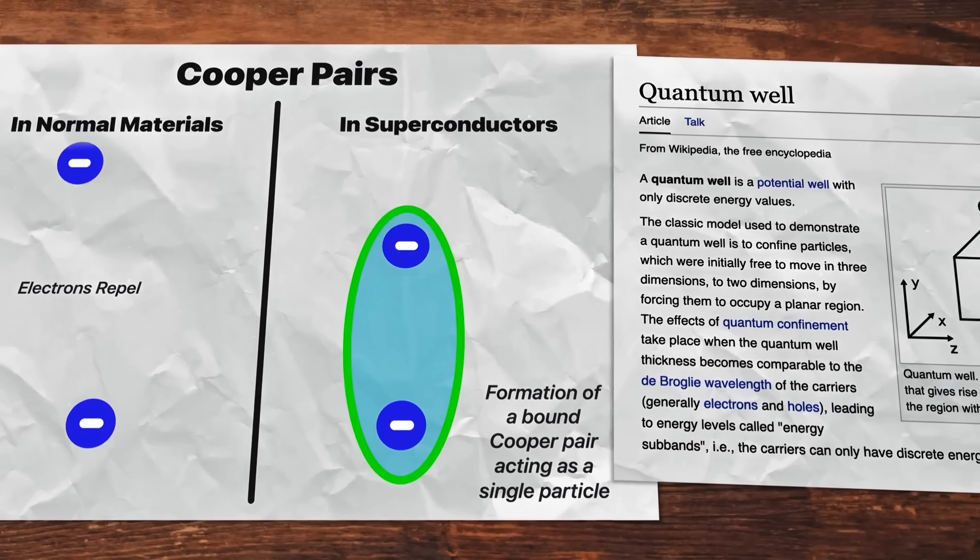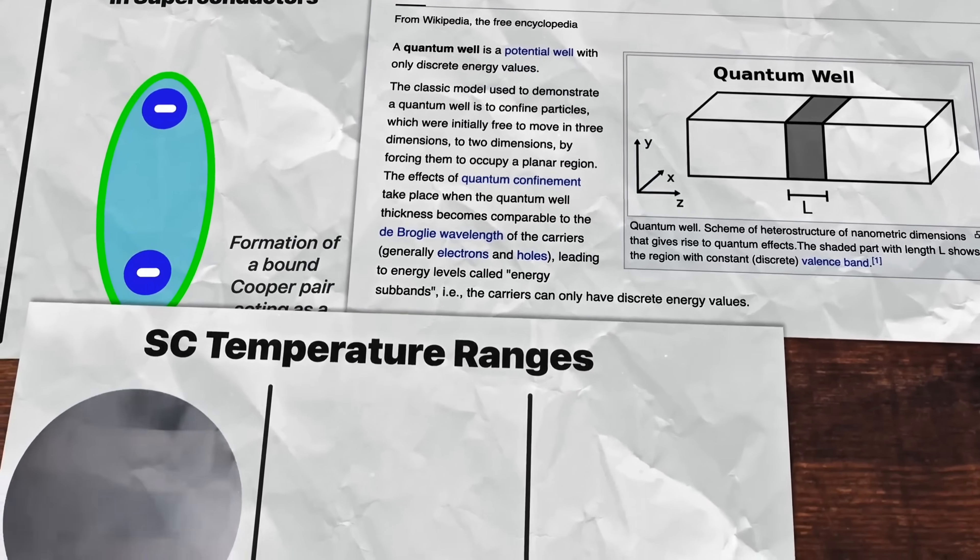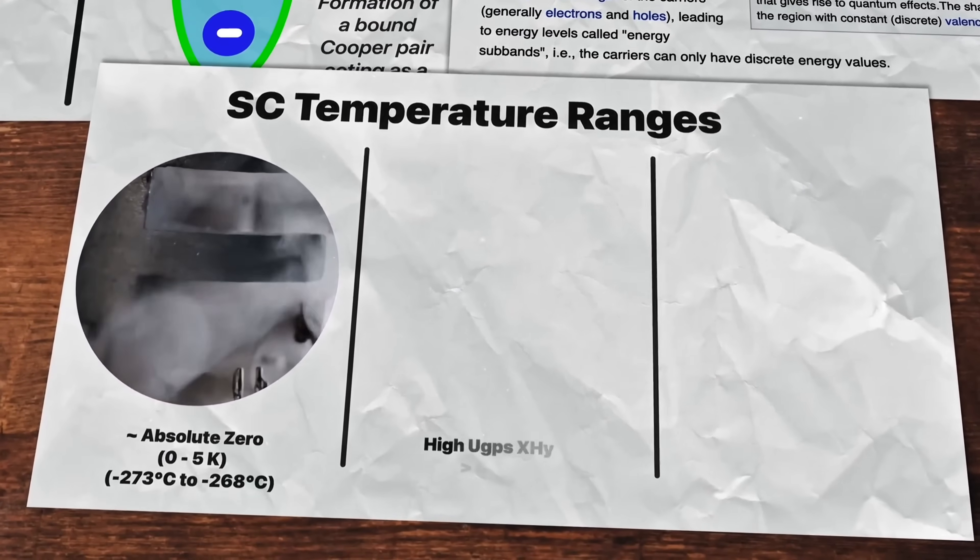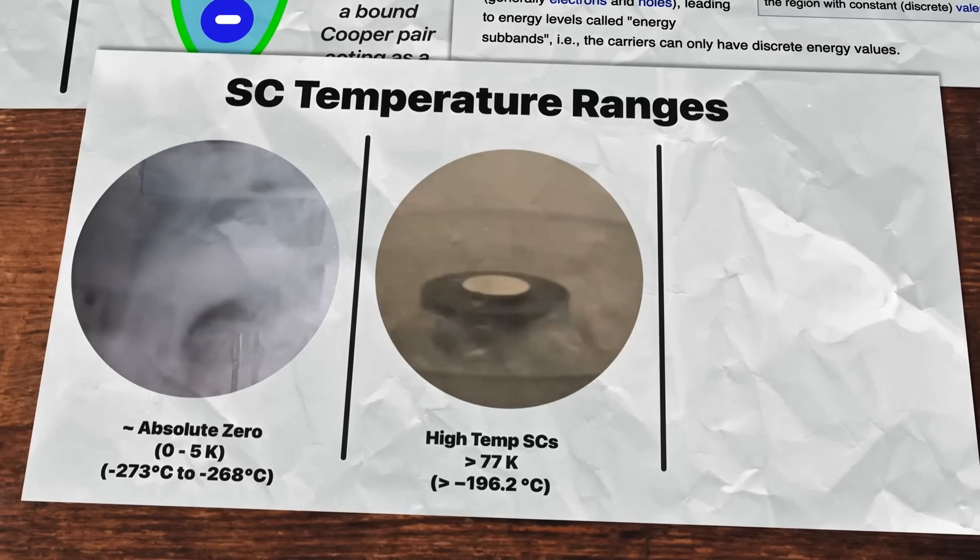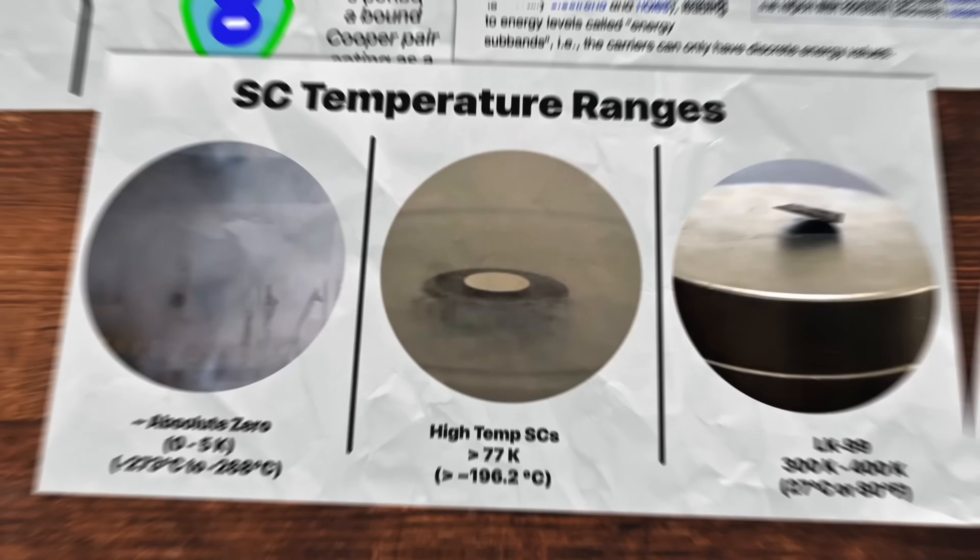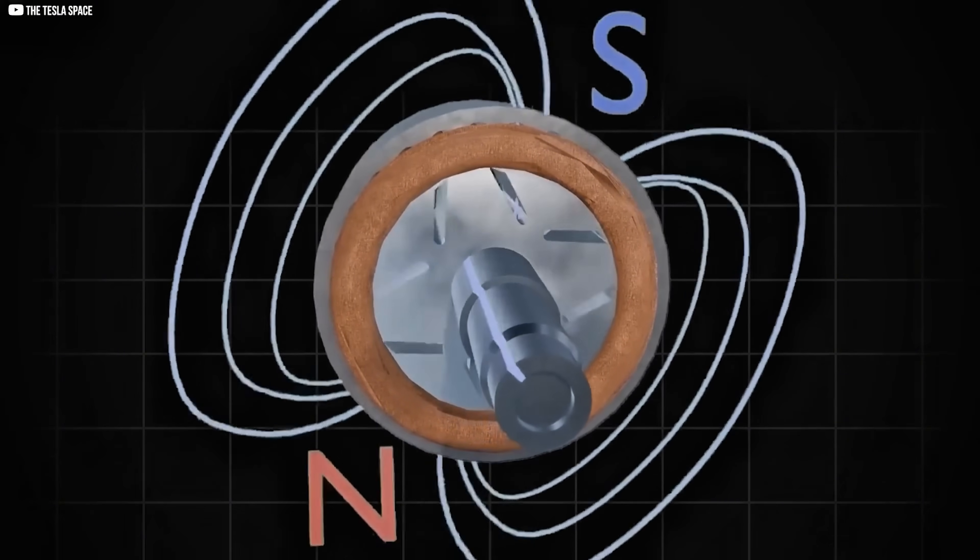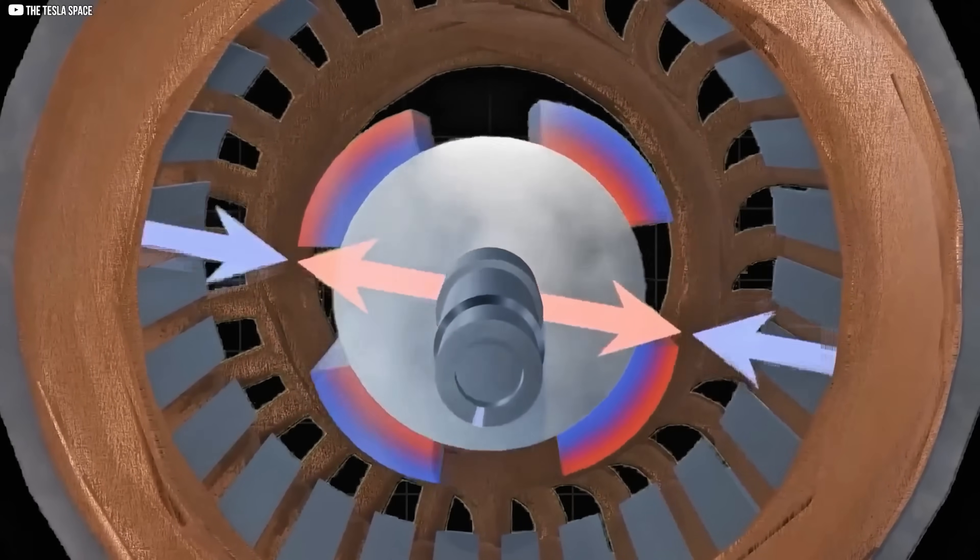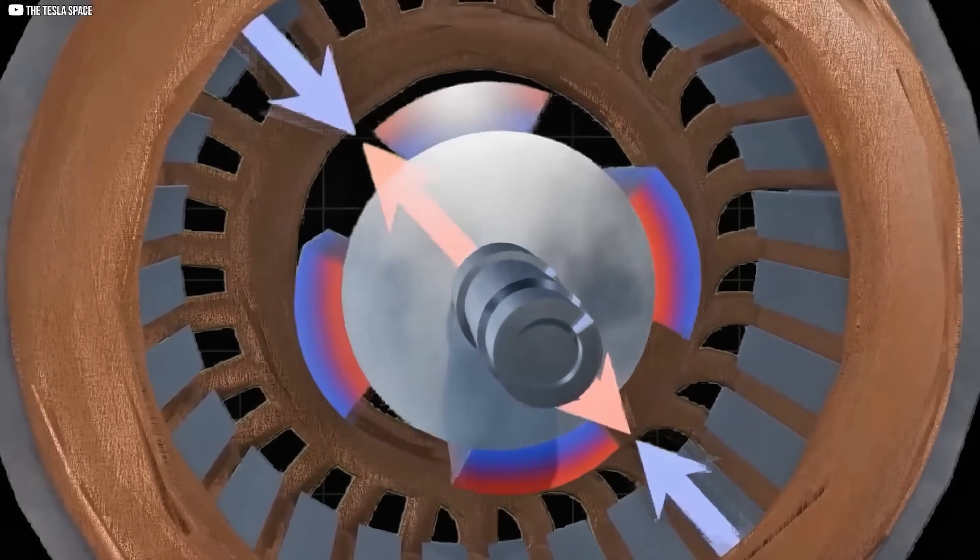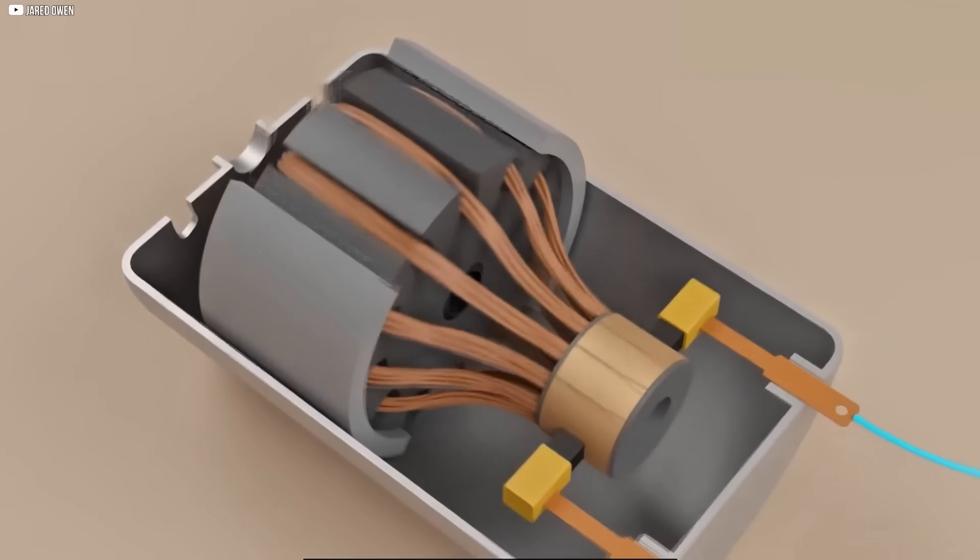Imagine what LK99 could mean. In a normal wire, electricity loses power as heat. But a superconducting wire has zero resistance, letting current flow without losing a single joule of energy. It's like sending electricity on a frictionless highway with no losses. Some enthusiasts even talk about a superconducting generator that never stops, producing continuous power. For decades, people have fantasized about infinite energy, and LK99's promise seemed to resurrect that dream.